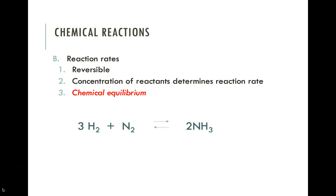Chemical reactions are all different. They all depend on the properties of the individual atom or molecule and how they interact with the other reactants in the equation. Chemical reactions are generally reversible — you can mix your reactants together to make products, and those products can be broken back down into the reactants. The concentration of the reactants is going to determine the reaction rate. Some reactions happen really quickly, others really slowly, and you can often change the rate by increasing one or more reactants.